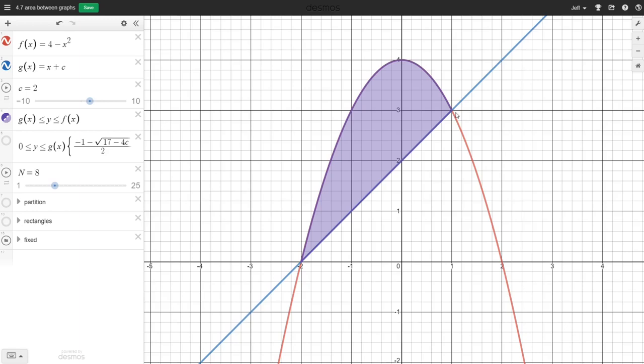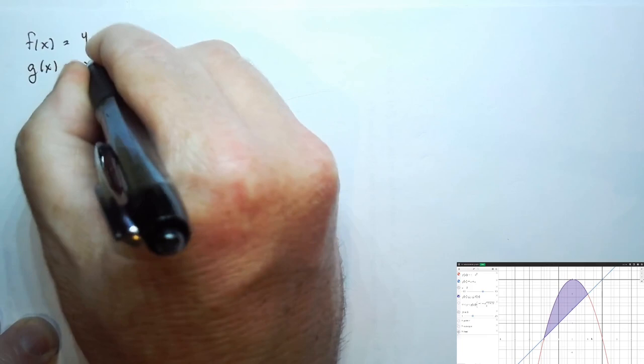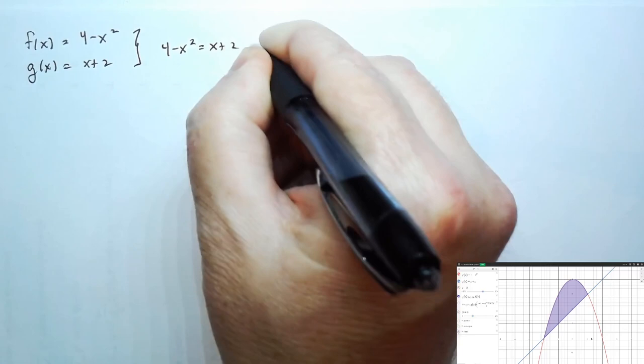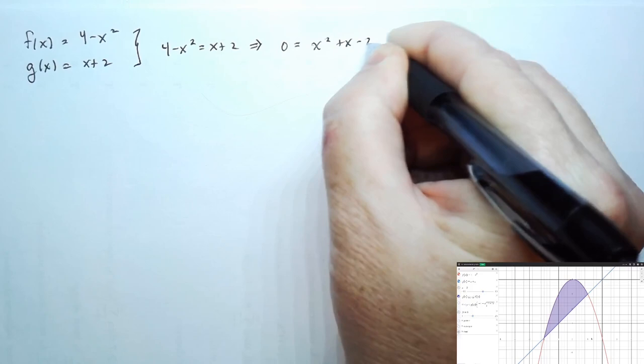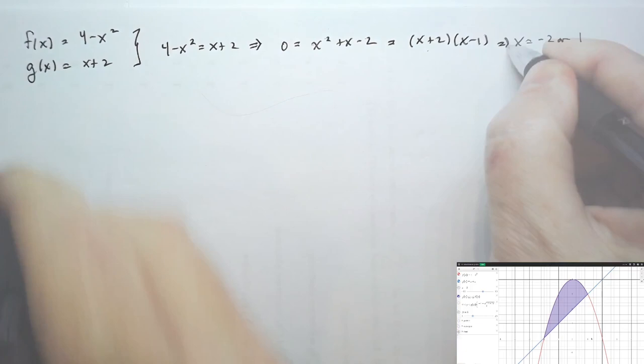One thing we have to do is figure out our starting and stopping points for our integrals. It appears from the graph that those are where x equals negative 2 and x equals 1, but in general we need to solve for these algebraically. Our f(x) is 4 minus x squared and g(x) is x plus 2. Setting the outputs equal and factoring, we find x must be negative 2 or x must be 1.